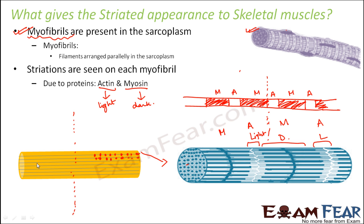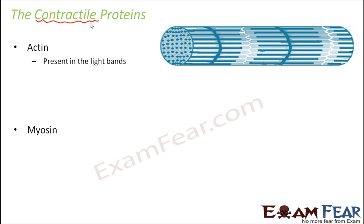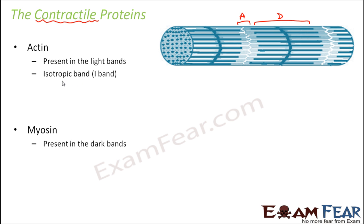Inside the muscle fiber, you have thin filaments called myofibrils, and the striations on the myofibril are due to actin and myosin. Actin and myosin are known as contractile proteins because they are capable of causing muscle contraction. Actin is present in the light bands whereas myosin is present in the dark bands.